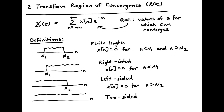Hello, and welcome to a DSP video describing the Z-transform region of convergence. This is the equation for the bilateral Z-transform, and the region of convergence is the values of Z for which this infinite sum converges.